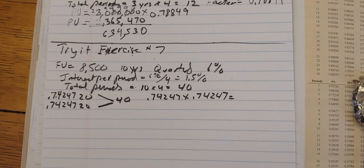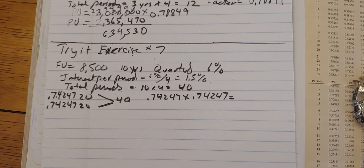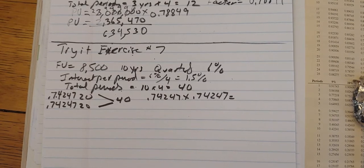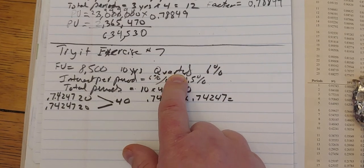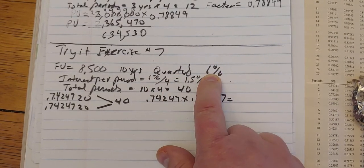All right, so we know that the future value we want is $8,500 and we want to figure this out in 10 years. So in 10 years, I want $8,500. It's going to be compounded quarterly. That's our savings vehicle, compounded quarterly at 6%.